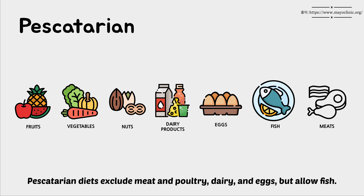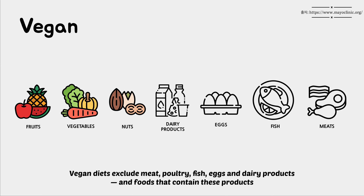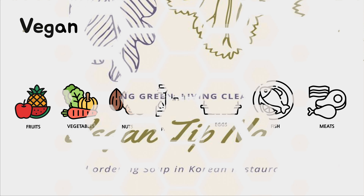Pescatarian diets exclude meat, poultry, dairy, and eggs, but allow fish. Vegan diets exclude meat, poultry, fish, eggs, and dairy products, and any foods that contain these products.